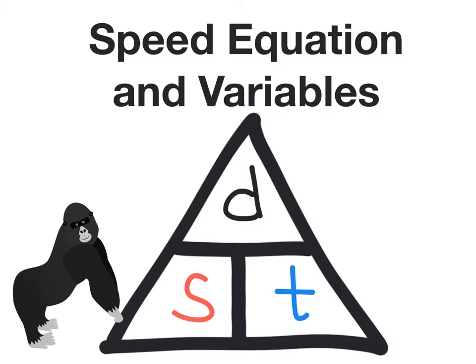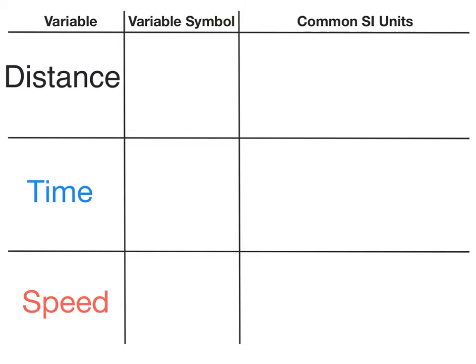This video is going to look at the speed equation and the variables associated with it. The three variables are distance, time, and speed.